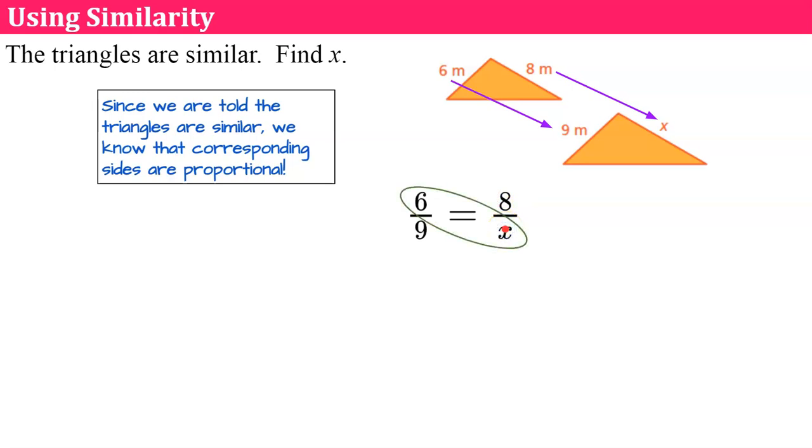We're going to use cross product property. 6 times x is going to be equal to 8 times 9. 8 times 9 is 72. Divide both sides by 6, and x is equal to 12. So our missing side is 12.